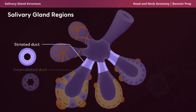The striated duct serves to modify and process the saliva produced by the glandular acini before it is released into the oral cavity. The term striated refers to the characteristic appearance of the ductal epithelial cells when viewed under a microscope.